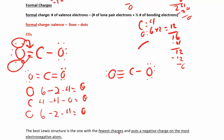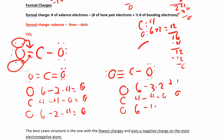The best formal charge arrangement puts the fewest and lowest charges on atoms. If there is a negative charge, you want it on the most electronegative atom. All zeros is ideal — you can't do better than that. For ions, the formal charges must add up to whatever the overall charge is on the molecule.